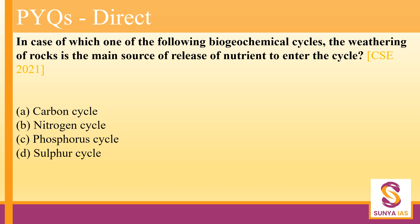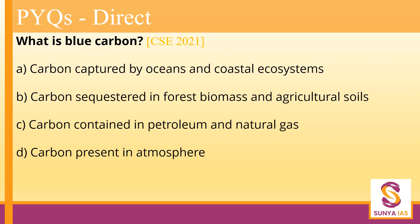Let me show you a few sample questions to illustrate how this course can be beneficial. This question asks about biogeochemical cycles — specifically that weathering of rocks is a main source. I have classified this as a direct question, meaning it is present in the book. The answer is the Phosphorus cycle. These are the kinds of questions I expect you to get right, without getting confused between carbon, nitrogen, or sulfur cycles. For direct questions, the target is 100% accuracy.